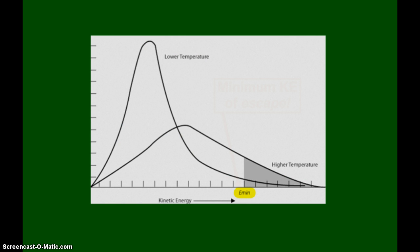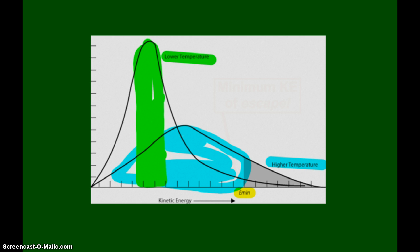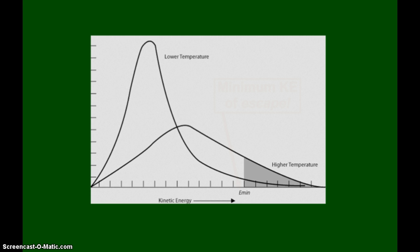Here's this lovely graph, we looked at this during the gas section as well. It's that Bozeman graph, and it shows us the ranges of kinetic energies of particles. When you are at a colder temperature, at a lower temperature, you see at a lower temperature we have many more of the particles in the same kinetic energy range. And then at a warmer temperature, we have a much more dispersed temperature range.